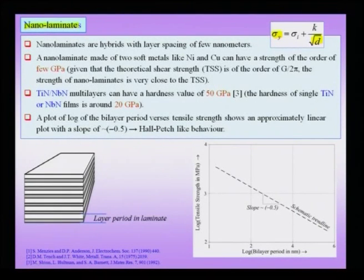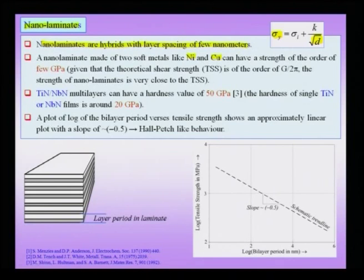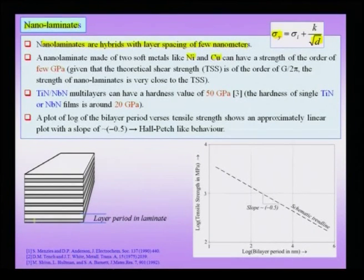We will now consider a hybrid and explore the applicability of the Hall-Petch relationship in nano laminates and particulate composites. Nano laminates are hybrids with layer spacing of a few nanometers. In the example considered, one material could be nickel and another could be copper, though you could take a wide variety of materials such as a germanium layer followed by a germanium-silicon solid solution layer, or a gallium arsenide layer and an indium gallium arsenide layer. You can form a bilayer — essentially a 2D nano crystal — and stack them to obtain a laminate structure.